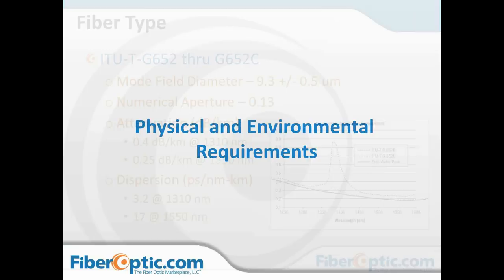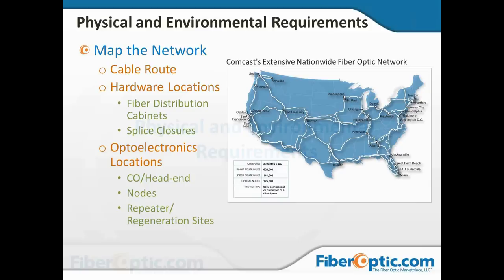Physical and environmental requirements is where we start looking at the outside plant, maps, and routing inside buildings — developing the path the fiber will take. In the outside plant we look at distribution hubs and cabinets; inside, communication closets. In both cases, we look at splice enclosures and where to place them. We also need to consider electronics locations — COs and head ends, nodes, repeaters or regeneration sites — all as part of the overall design.